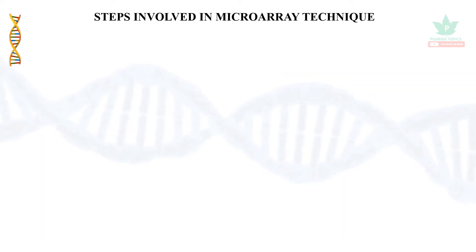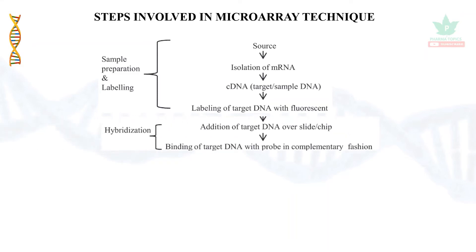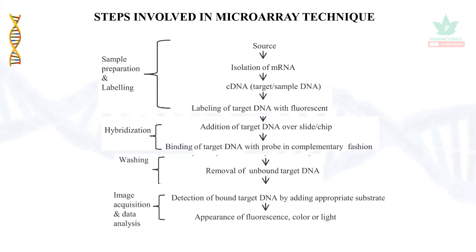What are the steps of microarray? First, sample preparation and labeling. We label the cDNA with a fluorescent dye. We then hybridize the target DNA to the DNA chips using complementary base pairing. The next step is hybridization. Then we remove the unbound DNA. The complementary base pairing is detected via fluorescence dye. We can detect light, color, and fluorescence. These are the most important steps.